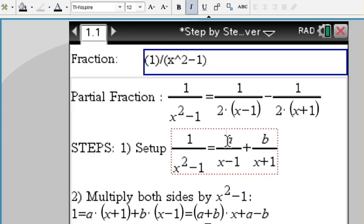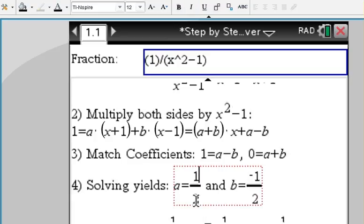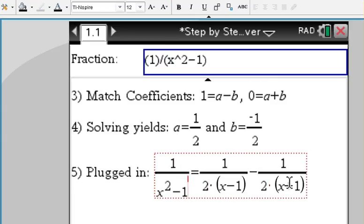We do it all out. We set up the a over x minus one plus b over x plus one. These two denominators multiplied, of course, will give you this denominator. And then we do our steps until we find the coefficients a and b, plug them in, and here we have our partial decomposition.